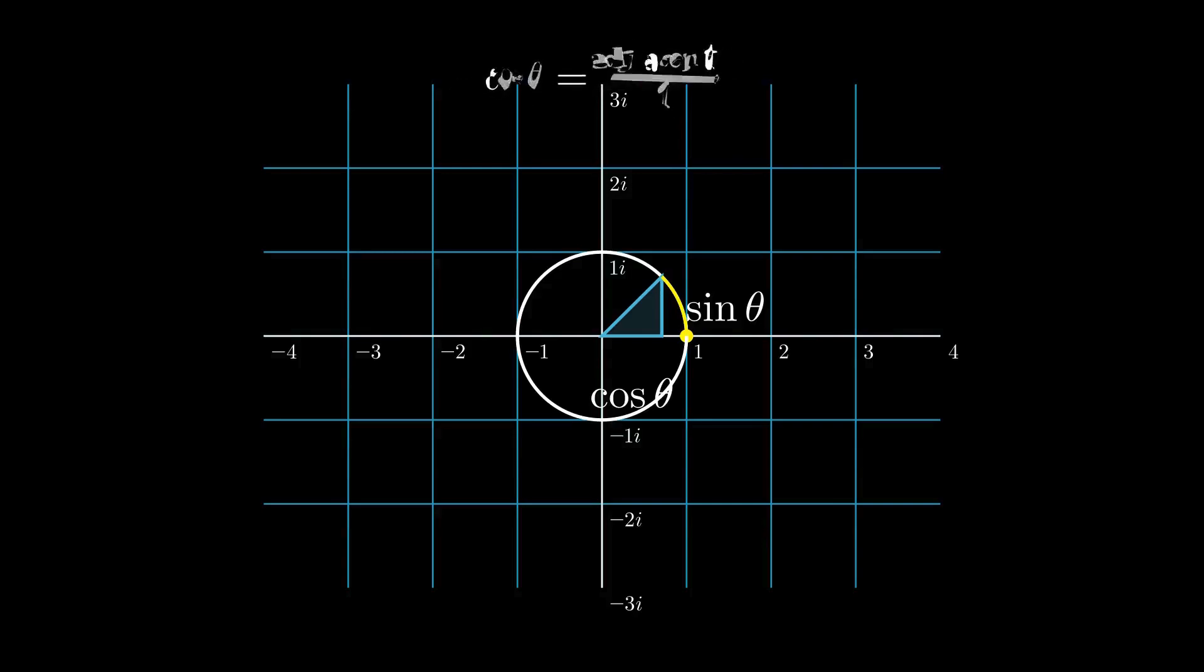The same logic applies to the cosine of theta, but this time cosine of theta is equal to the adjacent side. Another key thing to note is that since arc length is found by the formula l equals r times theta, and we know that r, the radius, is just one, the angle theta in radians must be equal to the arc length.